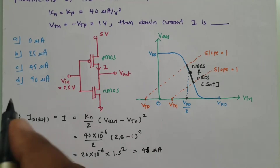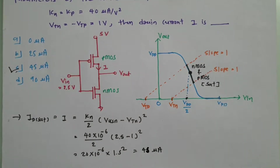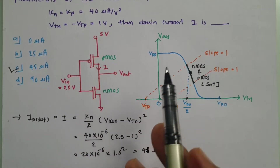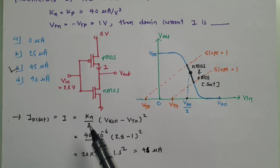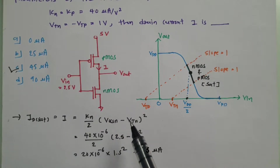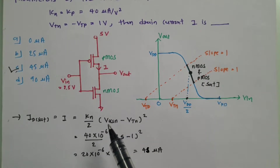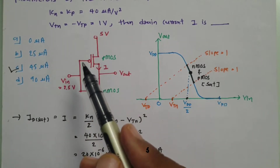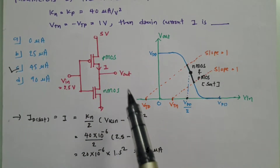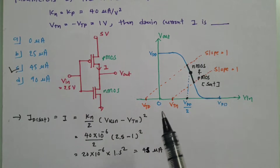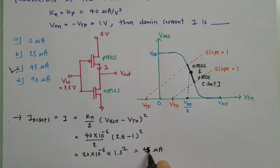So the answer is 45 microamperes — option C is correct. You can verify using the PMOS transistor formula: I = (KP/2) × (VGSP − VTP)², where VGSP = VIN − VDD and VTP = −1. Substituting these values gives exactly the same result of 45 microamperes.